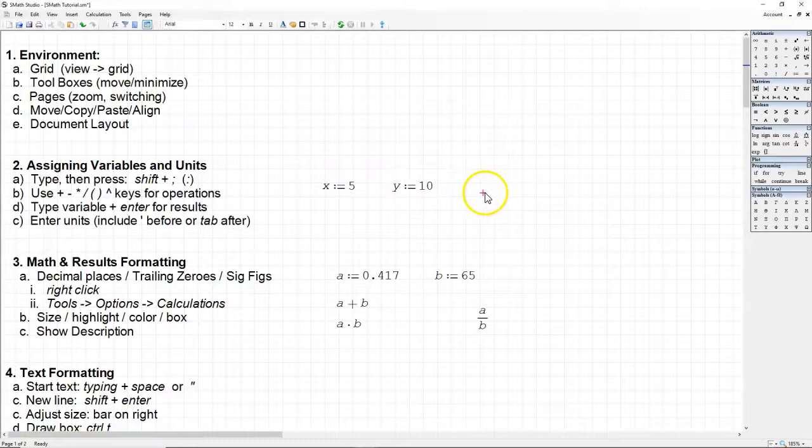Now if I want to do an operation, let's make Z. And we're going to assign this again using the shift semicolon. We're assigning this to be X plus Y. All I'm using is just my plus. And then we can use the minus, the asterisk, the division sign or the slash, parentheses, and the caret for different operations. Now I can do a couple things. If I hit the equal sign on my keyboard, it's going to give me the answer. I can also just type Z equals, and that gives me the answer of 15.